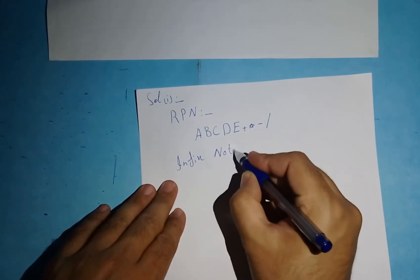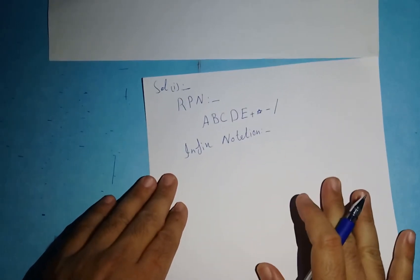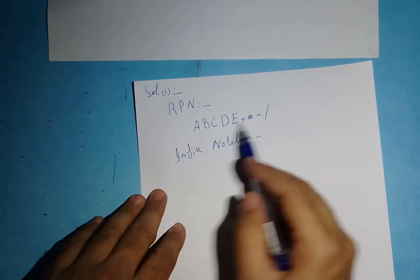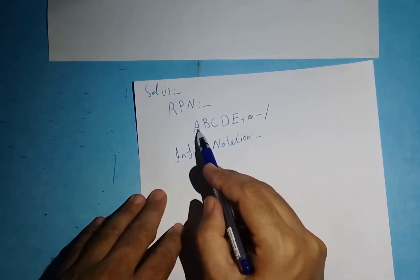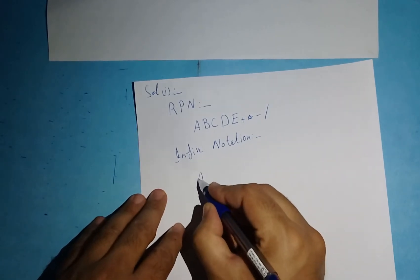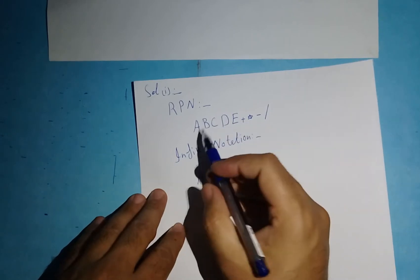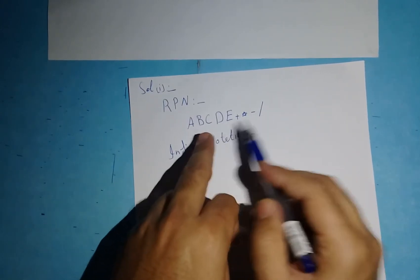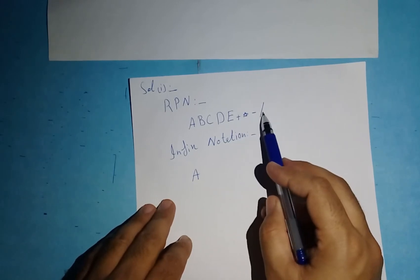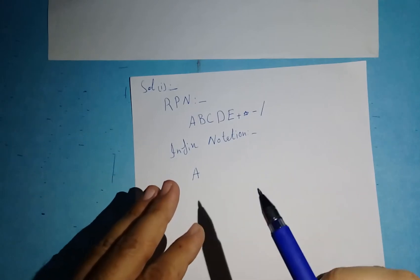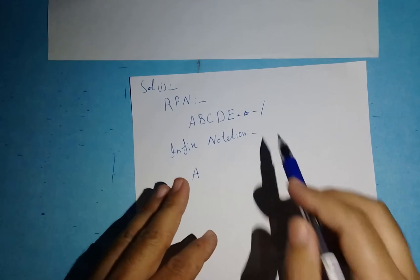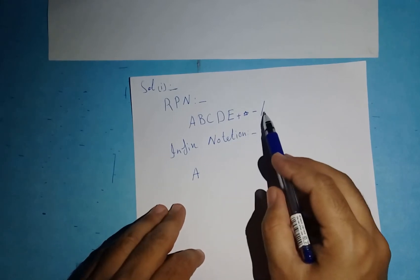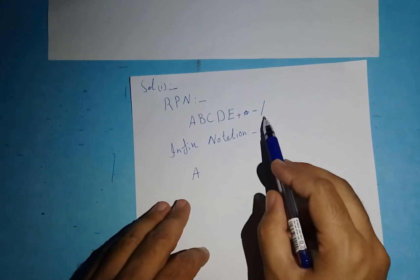First, you have to take the first variable from the given RPN notation. The first variable is 'a', so I write it down here. Now I go back to the signs. The signs in this notation are plus, multiply, minus, and divide. I start taking signs from the rightmost side, so the first sign is divide. I take the divide sign.